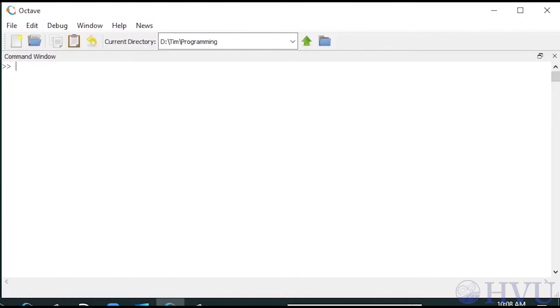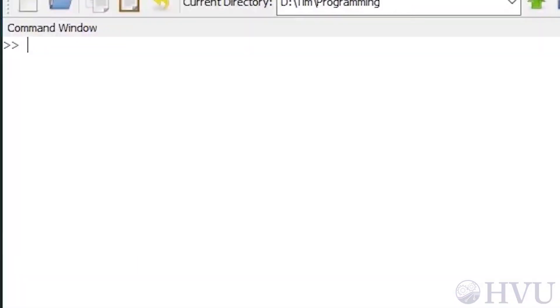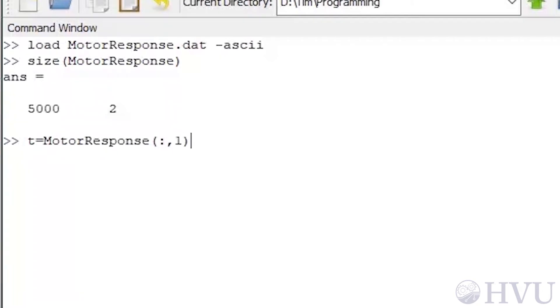I recorded the response data with an oscilloscope and saved it as a text file. I'll import the data file using the Load command. I put the data file in my current working directory, so I can use the syntax load motorresponse.dat with a space dash ascii. I'll check the size of the data by typing size of motorresponse. There are 5000 pairs of time and speed data. Time is in the first column and speed is in the second. For convenience I'll put the first column of the data file in a variable named T and the second column the speed in a variable named V.